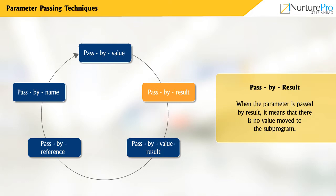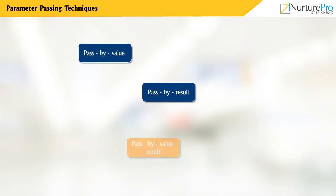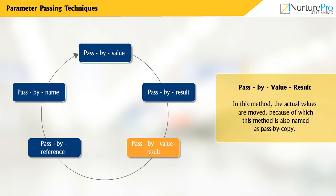Pass by result: When the parameter is passed by result, it means that there is no value moved to the sub-program. In this method, the local variable is its corresponding formal parameter. However, as soon as the control is transferred back to the caller, the value is also passed to the actual parameter of the caller. This parameter passing method belongs to out-mode semantics.